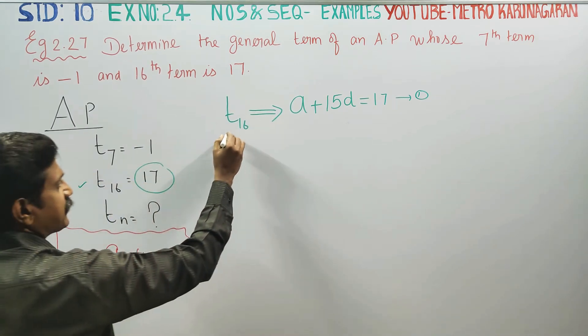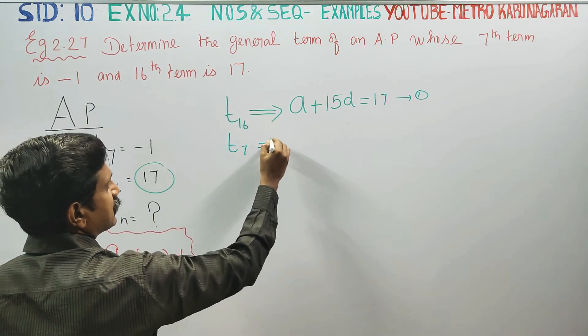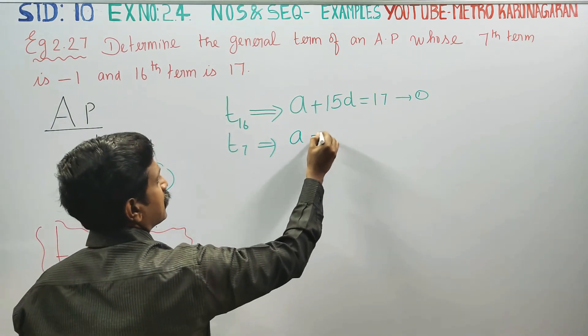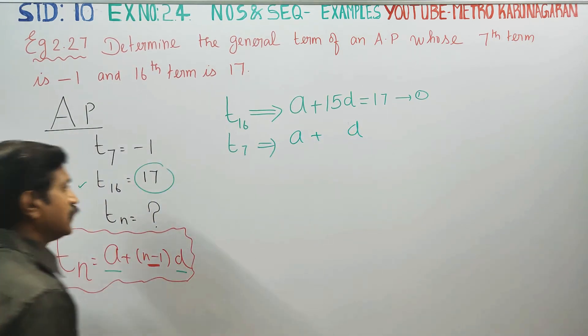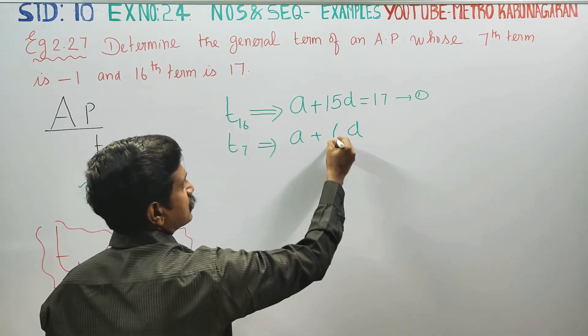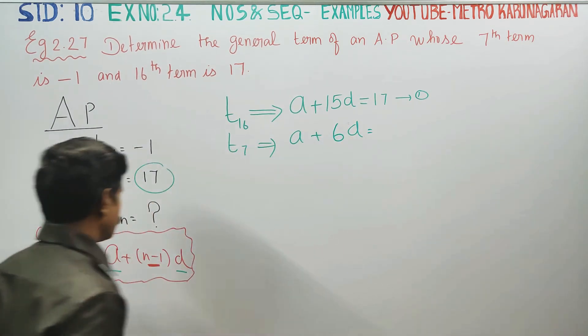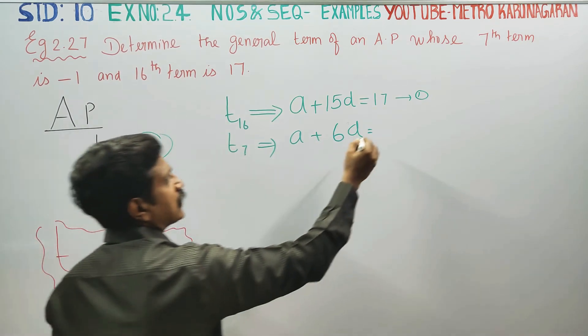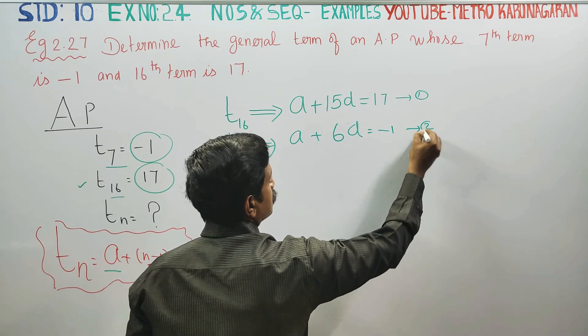T7, the formula is A plus N minus 1 into D. 7 minus 1 is 6D. T7 equals A plus 6D equals minus 1. This is equation number 2.